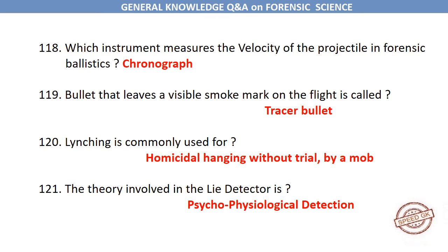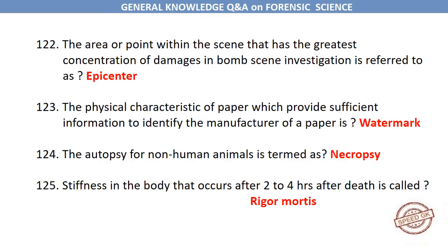A bullet that leaves a visible smoke mark in flight is called a tracer bullet. Lynching is commonly used for homicidal hanging without trial by a mob. The theory involved in the lie detector is psychophysiological detection. The area or point within the scene that has the greatest concentration of damage in a bomb scene investigation is referred to as the epicenter. The physical characteristic of paper which provides sufficient information to identify the manufacturer is the watermark. The autopsy for non-human animals is termed necropsy. Stiffness in the body that occurs after 2–4 hours after death is called rigor mortis.